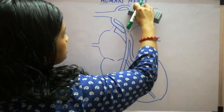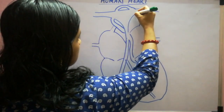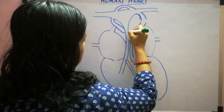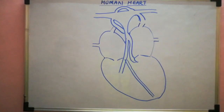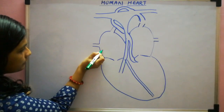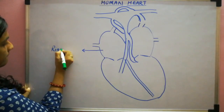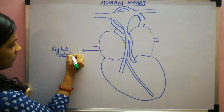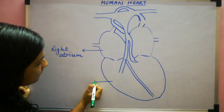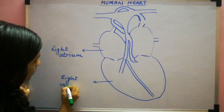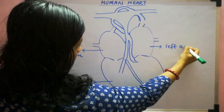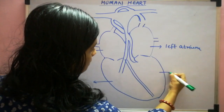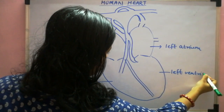Then you can rub the middle portions — this portion and then this portion. Now the structure is complete. Now the main thing is labeling. The first label: this is the right atrium, this portion is the left atrium, this portion is the left ventricle. Now all four chambers are ready.